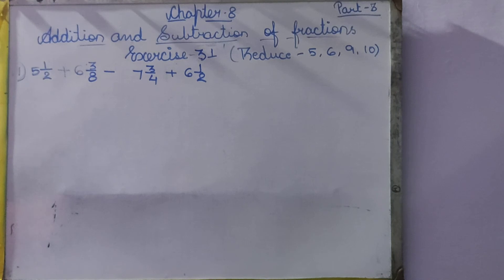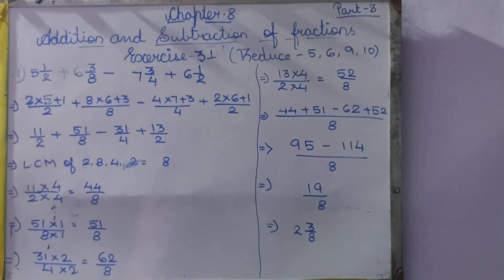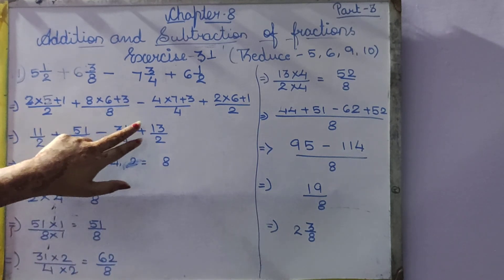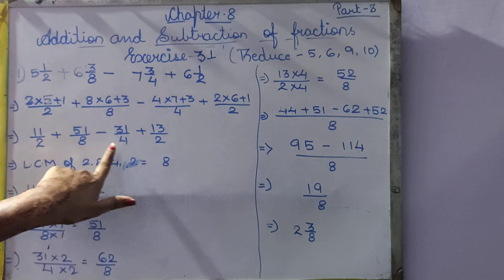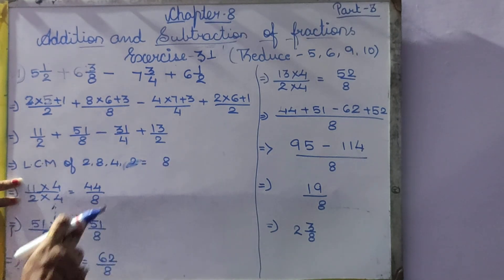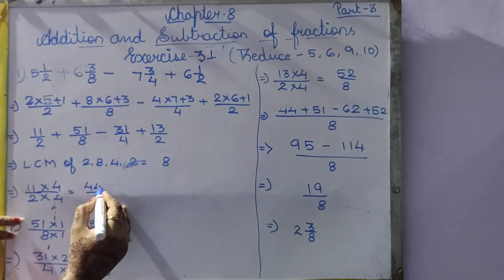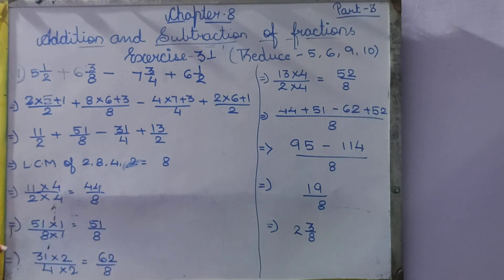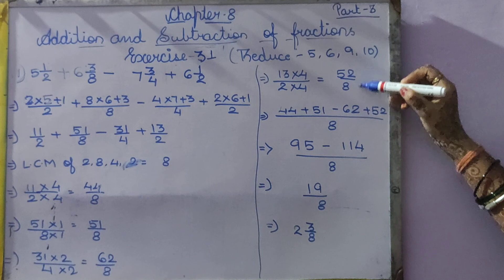So this is our question. First, we convert to improper fractions. We get 11 by 2, 51 by 8, 31 by 4, and 13 by 2. All the denominators are different. We take out the LCM and get 8. So: 11 by 2 becomes 44 by 8; 51 by 8 stays as 51 by 8; 31 by 4 becomes 62 by 8; and 13 by 2 becomes 52 by 8.